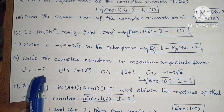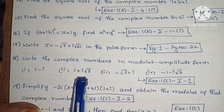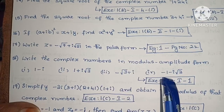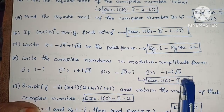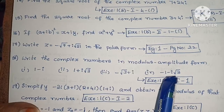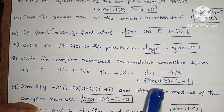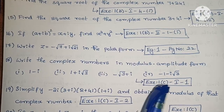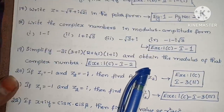Write the following in modulus amplitude form: first, 1 minus i; second, 1 plus i root 3; third, minus root 3 plus i; fourth, minus 1 minus i root 3. Exercise 1c, first roman, first one.